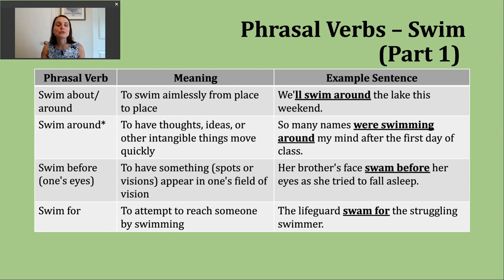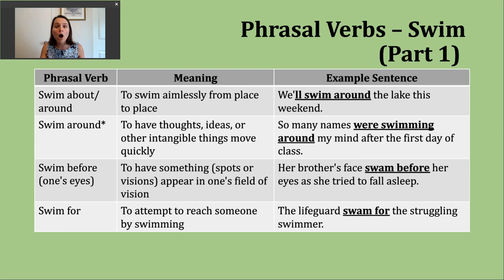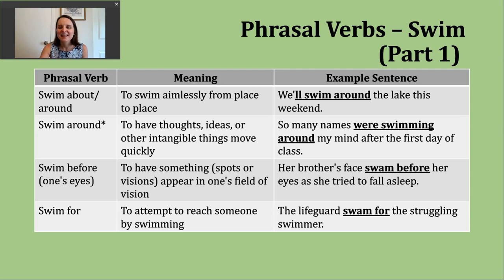'To swim for' means to attempt to reach someone by engaging in the activity of swimming — moving through water toward them. An example: 'The lifeguard swam for the struggling swimmer.' A lifeguard is a person whose job is to watch and make sure people are safe, either at a pool, beach, or other body of water. That is also an example of the simple past tense.